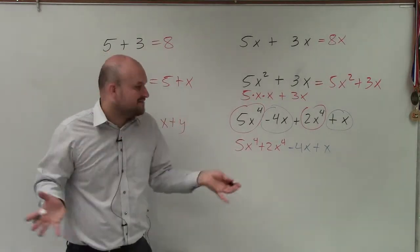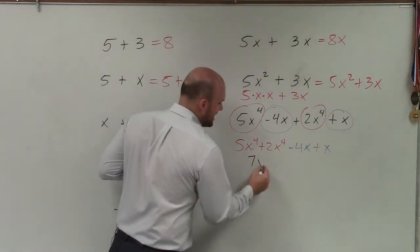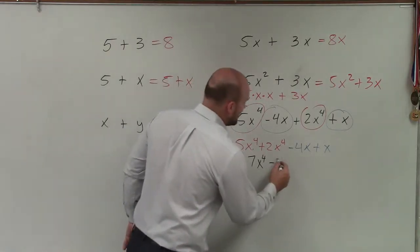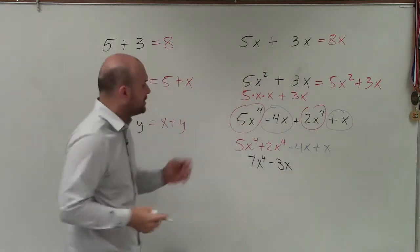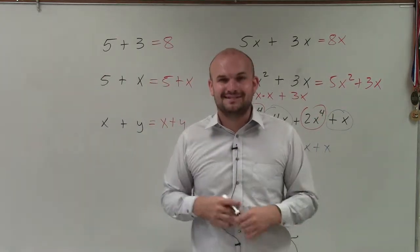So then just do 5x to the fourth plus 2x to the fourth. Again, that's like five bananas plus two bananas would be seven bananas. But in this case, our bananas is x to the fourth. And then negative 4x plus x would be a negative 3x. So there you go, ladies and gentlemen. That is just a basic understanding of how we combine like terms. Thanks.